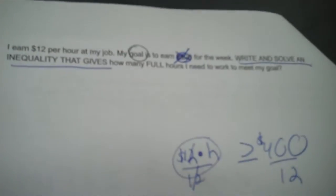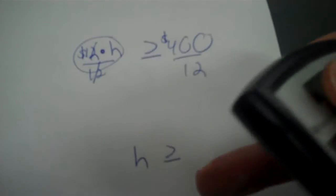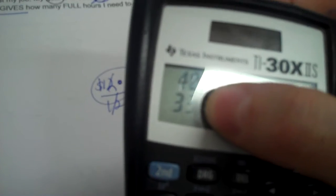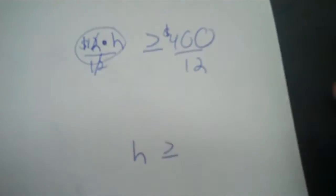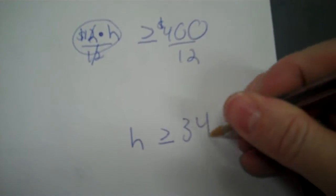It says how many full hours I need to work. If you have a greater than sign, you need to always round the whole number up — it's going to go to 34. It wouldn't be 33 because that wouldn't be enough; I wouldn't meet my goal. So that's going to be 34.